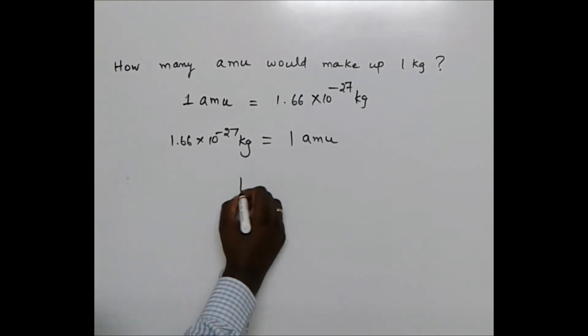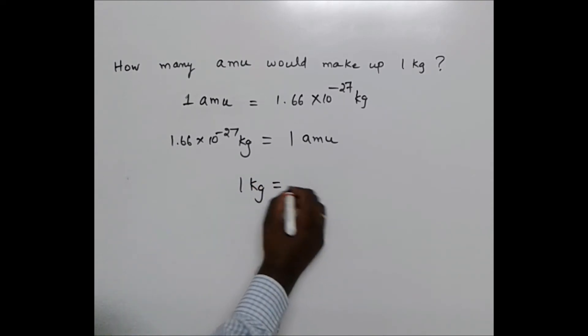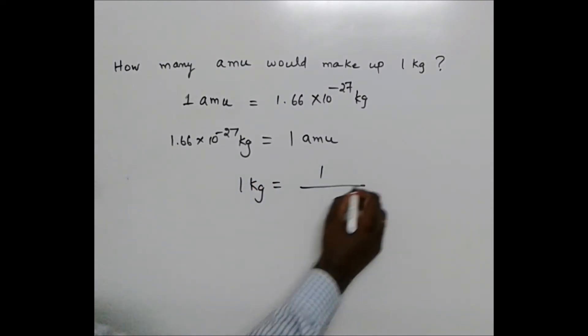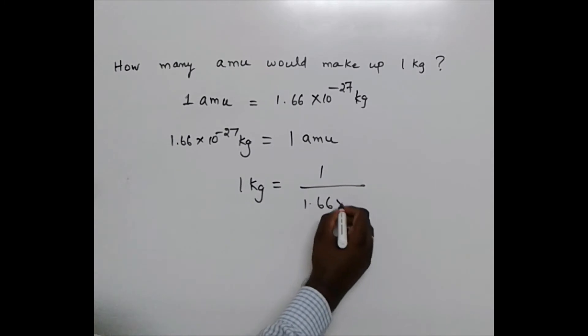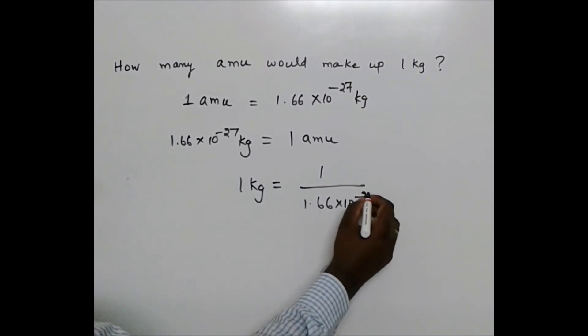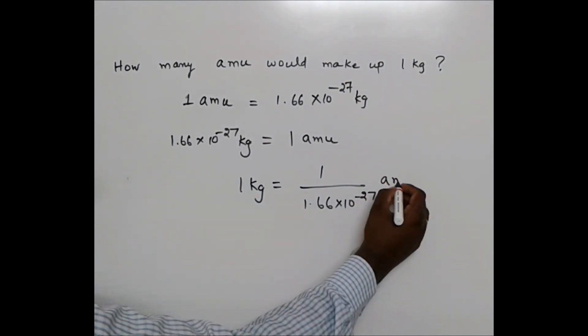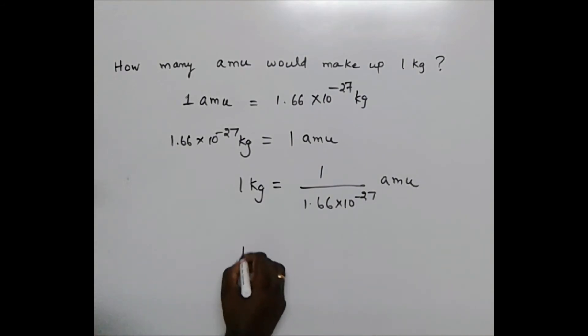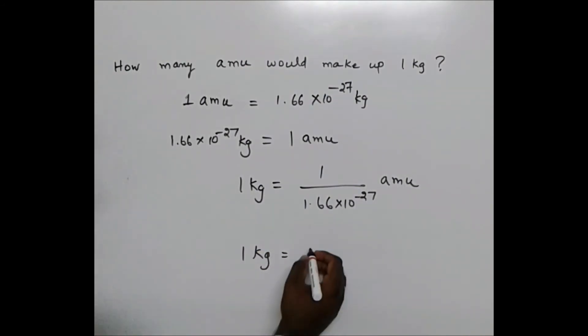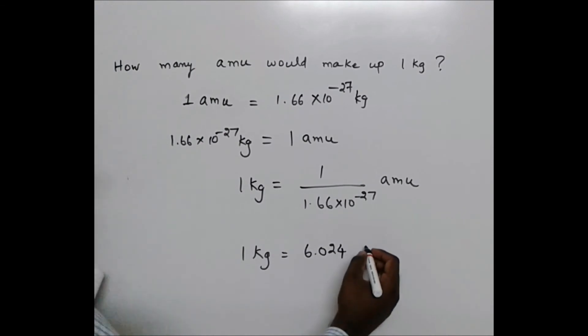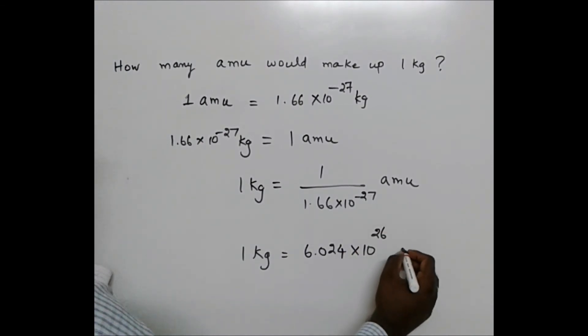So 1 kilogram is equal to 1 by 1.66 times 10 power minus 27 amu. So 1 kilogram can be written as, on dividing 1 by 1.66, I am going to get 6.024 times 10 power 26 atomic mass unit.